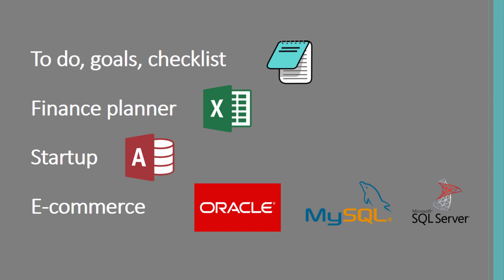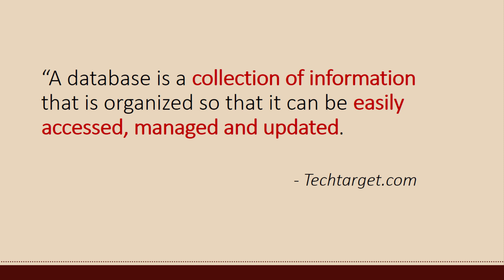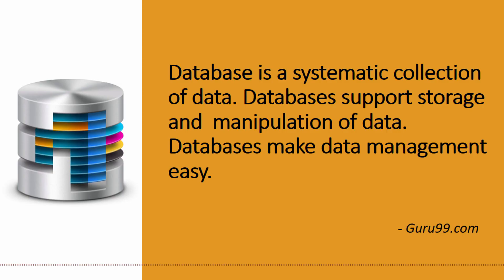After this example, this brings us back to the same question: what is a database? Before I give you my definition, let us look at what other websites say. One definition: a database is a collection of information that is organized so that it can be easily accessed, managed, and updated. From Wikipedia: a database is an organized collection of data. From guru99.com: a database is a systematic collection of data — it supports storage and manipulation of data, and makes data management easy.